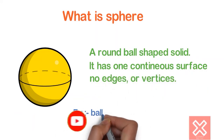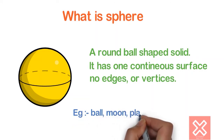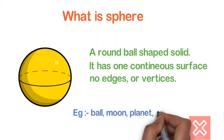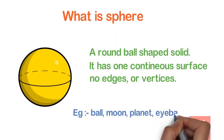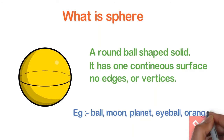You can take as examples: a ball, moon, planet, eyeball, orange — they are all spherical shapes. They don't have vertices, only one continuous surface.